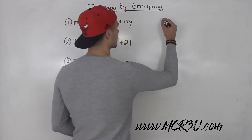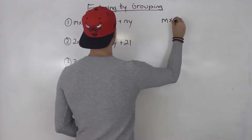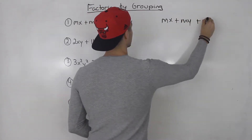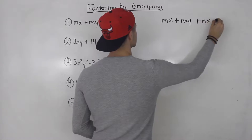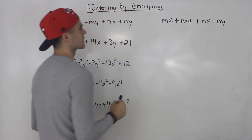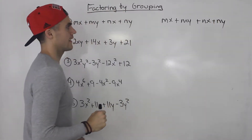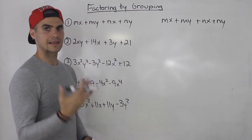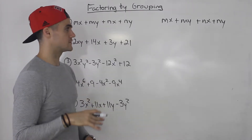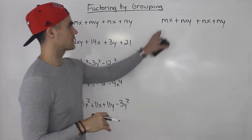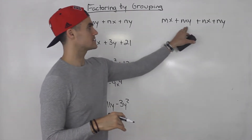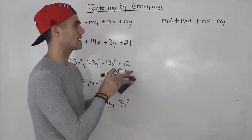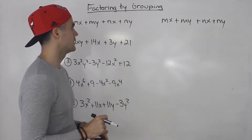we got mx plus ny plus nx plus ny. Factoring by grouping is basically like that last step of decomposition. What you want to do is factor out of these two, factor out of these two, and then factor a remaining expression out of them.